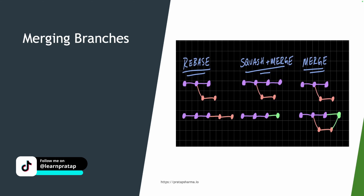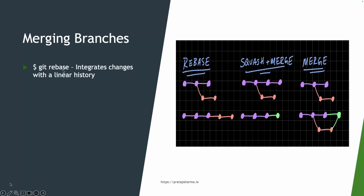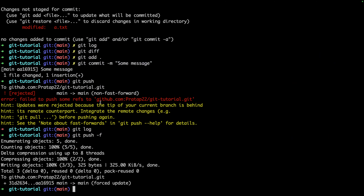Now let's learn about merging branches. We can merge two branches using three approaches: rebase, squash and merge, or simply merge. Rebase integrates changes with a linear history — commits are added linearly so you can always go back to any particular commit. You don't lose any history.